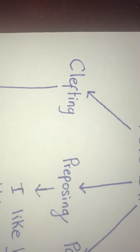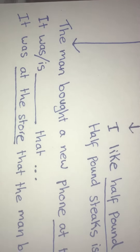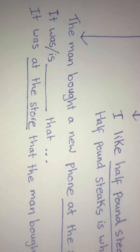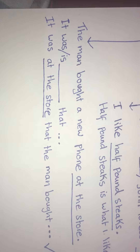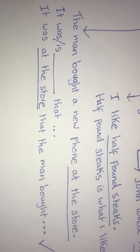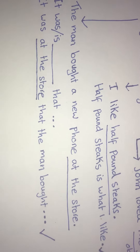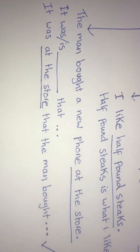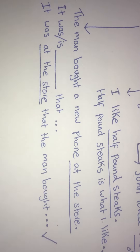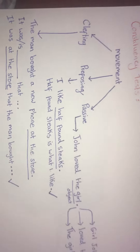The third test is clefting. Clefting is when you use the structure 'it was/is [blank] that.' For example, take the sentence: 'The man bought a new phone at the store.' If we want to see if 'at the store' is a constituent, we say: 'It was at the store that the man bought a new phone.' It sounds right, so 'at the store' is a constituent.